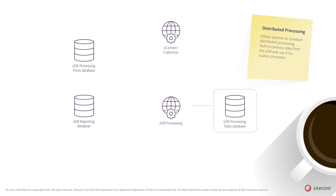When a distributed processing task is triggered, a task record is created in the XDB processing tasks database. The XDB processing role runs a data extraction to get an enumerator for the desired set of entities — for example, interactions or contacts in the XDB database. This data set can be limited on a time range. The data set is then split up into cursors in the XDB processing tasks database, one cursor per thread per XDB processing role.